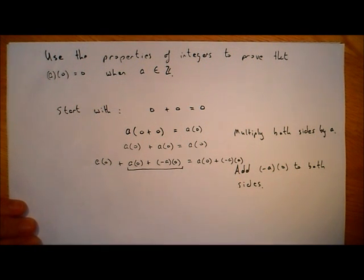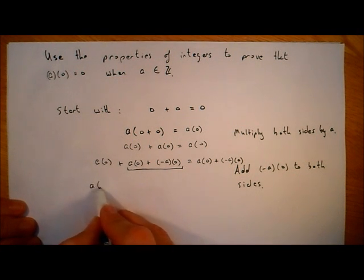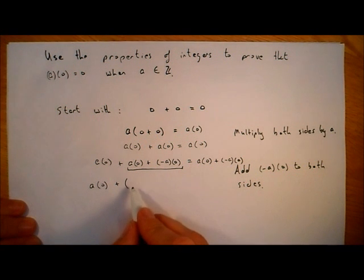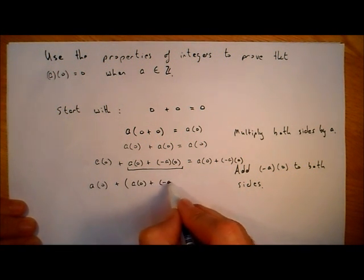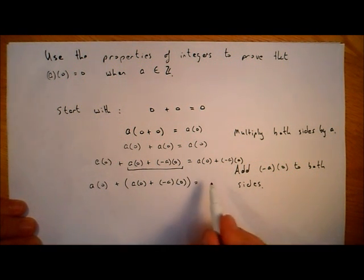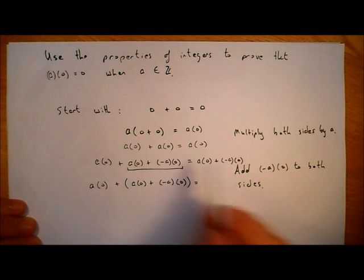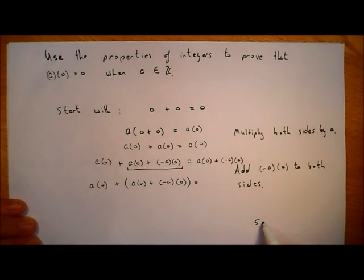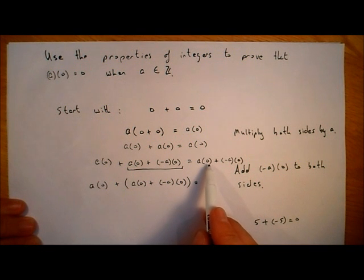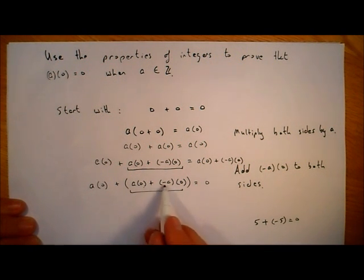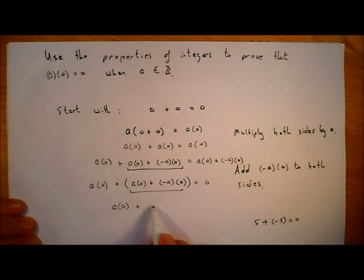Now we group these terms together — since the order of addition doesn't matter, we write a times zero plus, in brackets, a times zero plus minus a times zero. On the right, we have a times zero plus minus a times zero. Now, minus a times zero is the additive inverse of a times zero. Remember, the additive inverse of a number — for example, the additive inverse of five is minus five, because five plus minus five equals zero. So a times zero plus minus a times zero gives zero, meaning that bracketed expression is zero.